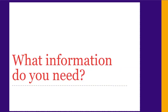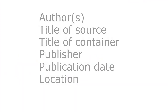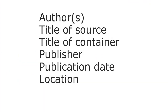Next, we'll look at what information you need to create a citation. MLA requires specific pieces of information about each of your sources. These include the author, the title, the title of the item that the source is located in, the publisher and place of publication, date, and information needed to locate a copy of the source. These pieces of information look a bit different for different types of sources.